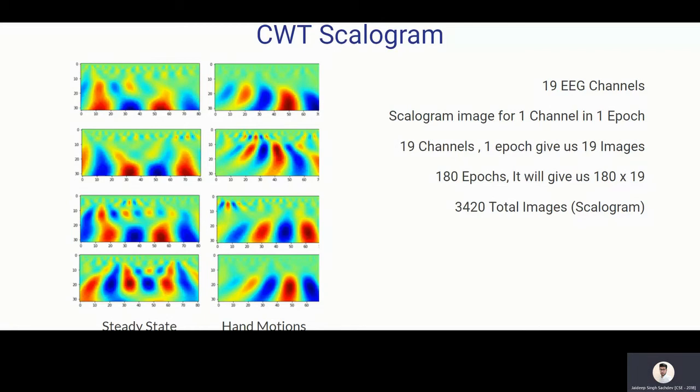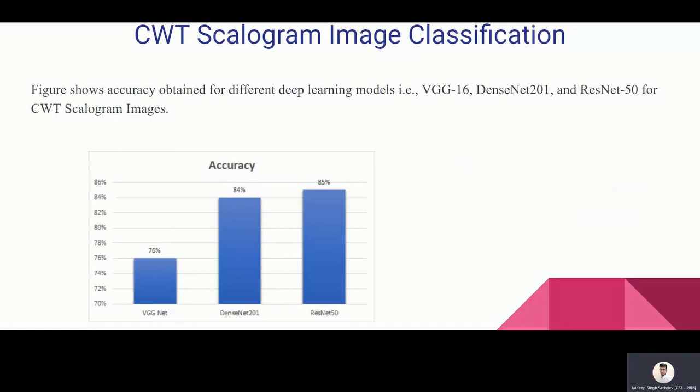So that's why what I did was we have 19 EEG channels, and how I got these images? Scalogram image for one channel in one epoch means for one epoch I have 19 channels. So 19 images and I have 180 epochs, so I got 180 cross 19, that is 3420 total scalogram images. I applied VGGNet, DenseNet, and ResNet for CWT scalogram images. And this is the accuracy which I got. The ResNet performed well.